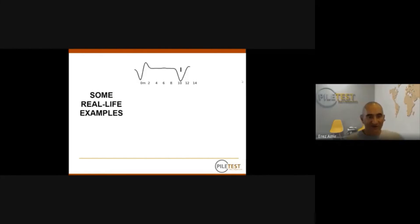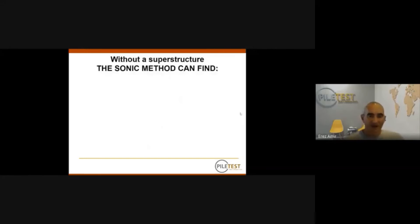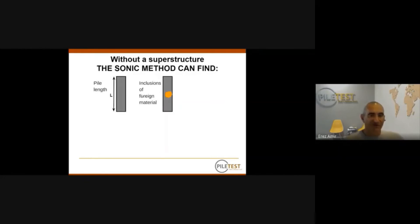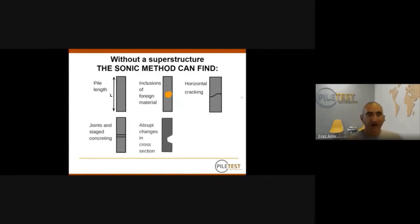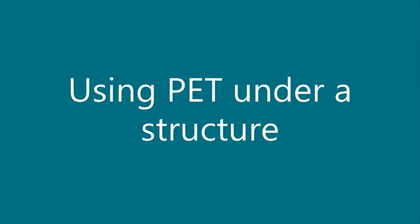In real-life examples, a good pile shows the trigger hammer impact and a clear echo from the bottom at 10 meters. A pile with necking shows an early reflection, and a pile with a bulge shows an inverted reflection. In regular testing without a superstructure, the sonic test can find pile length, inclusions or foreign materials, horizontal cracking, joints and stage concreting, sharp cross-section changes, and distinct soil layer changes. However, under an existing structure, pile length is essentially the only thing we can expect.